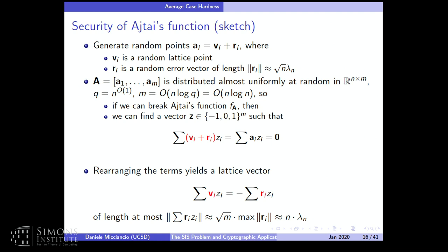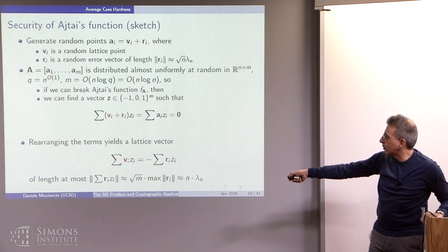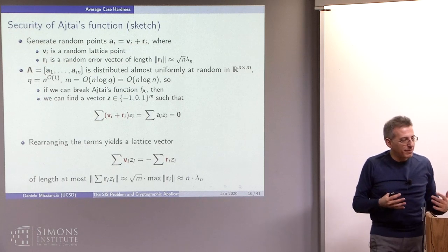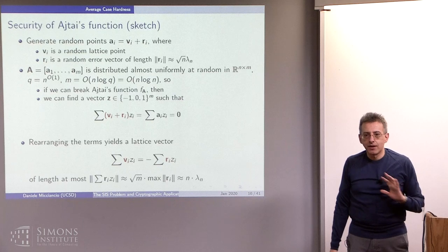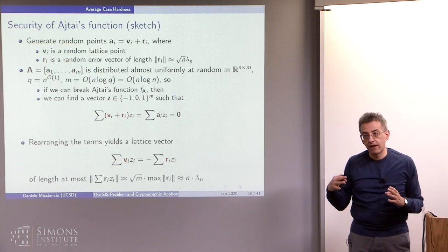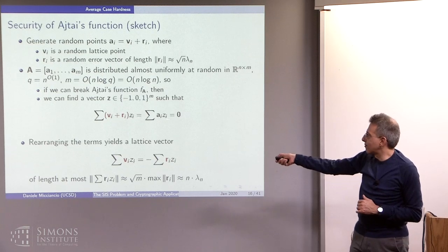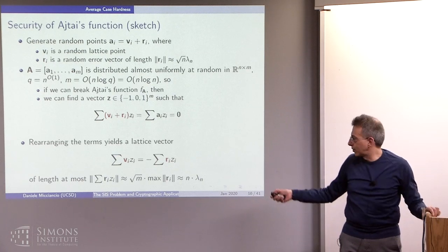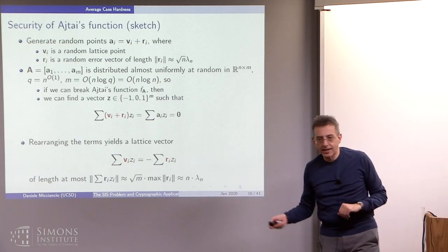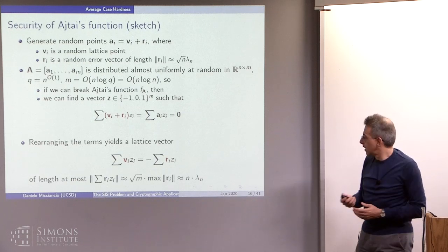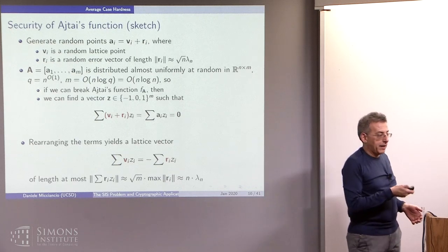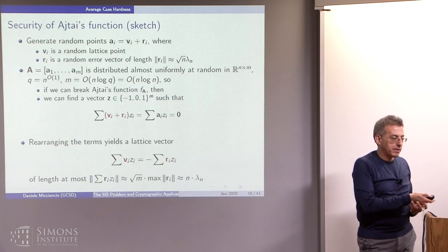So that's the idea of the proof. There are various technicalities omitted. One is that we were using real numbers, so we need to make this more precise using a fine grid. There is also a chance that even if z is a non-zero vector, the sum is zero — which is short but doesn't solve SVP. But there is enough information hidden in the process to show that even an all-powerful adversary cannot do that. That's why you need a function which is not injective. If the function were injective, the zero vector would be the only way to get zero as a result, but here different vectors map to the same point. The adversary doesn't know which one we can reconstruct, so the one we reconstruct will be non-zero with high probability. This concludes the proof sketch that the SIS problem is hard on average.